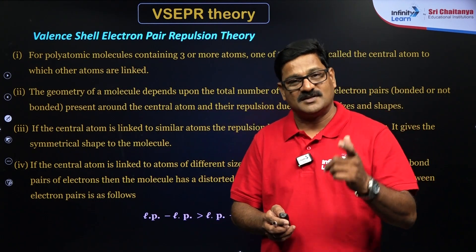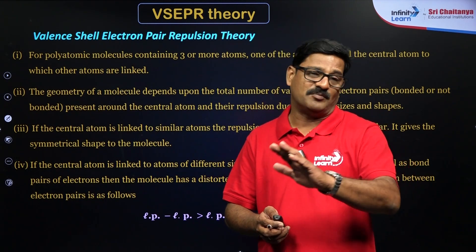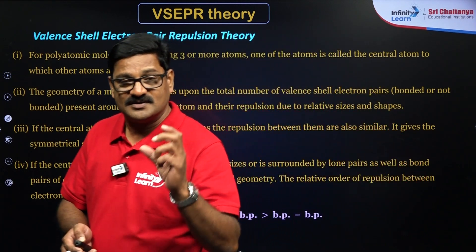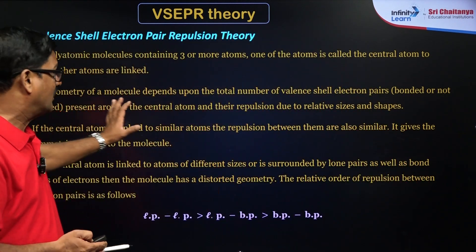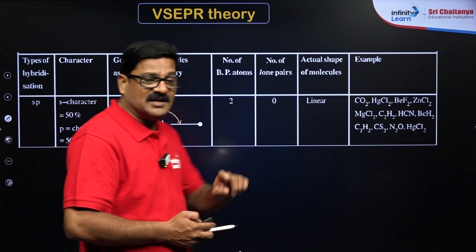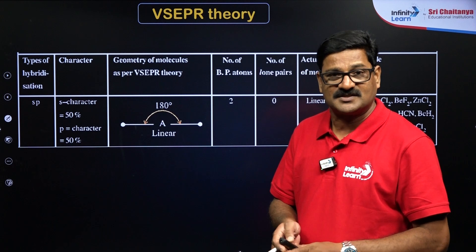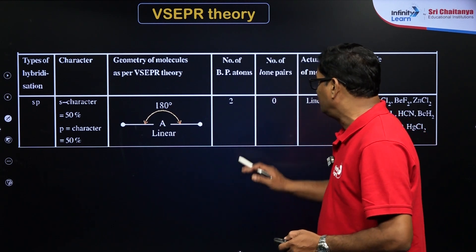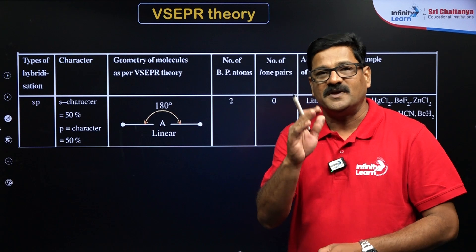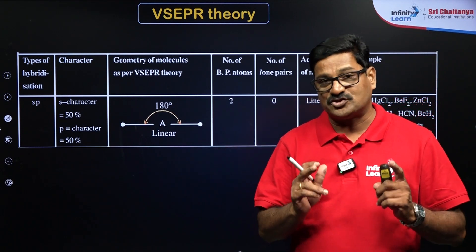We are going to decide the shape of the molecule based on the central atom, bond pairs, and hybridization. I am going to provide you a fragment of tables so that you can understand. Type of hybridization: if it is SP, it is linear hybridization. S character is 50%, P character is 50%. In that, if we have two bond pairs and zero lone pairs, if a molecule has zero lone pairs, it is going to have a regular geometry.